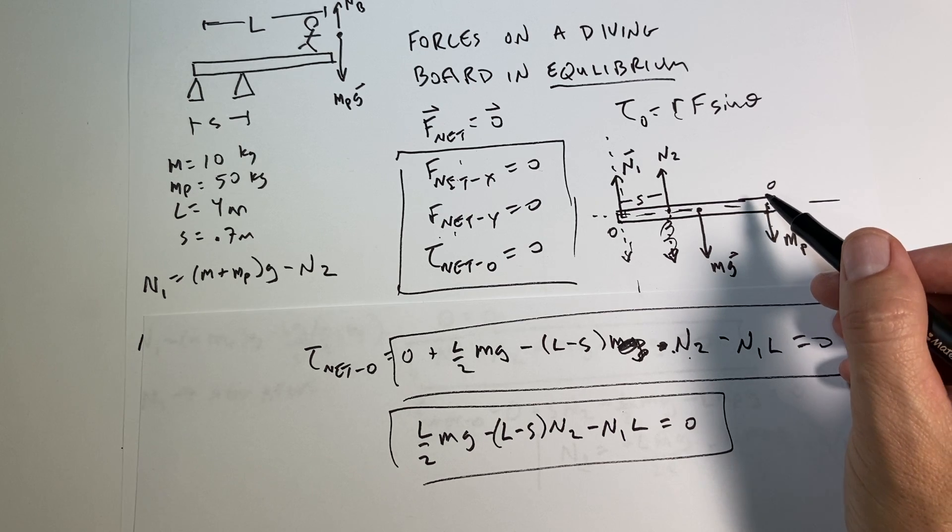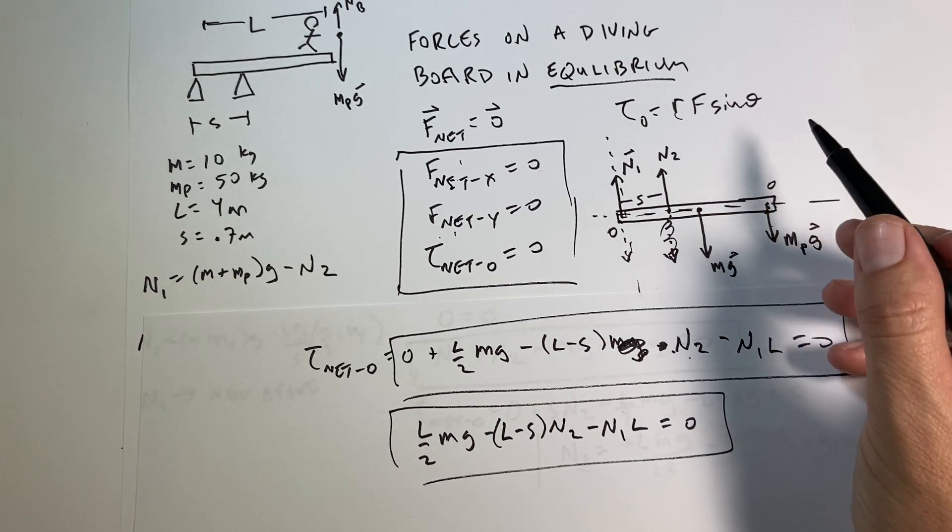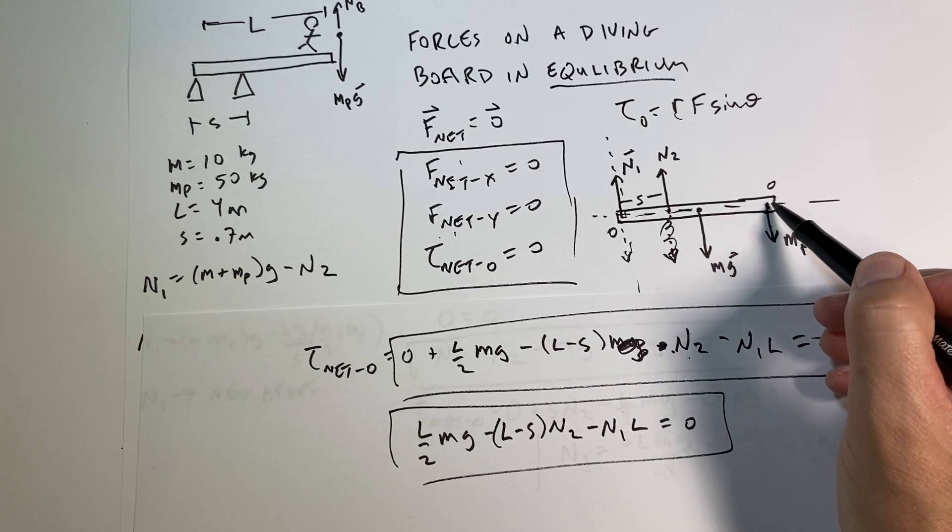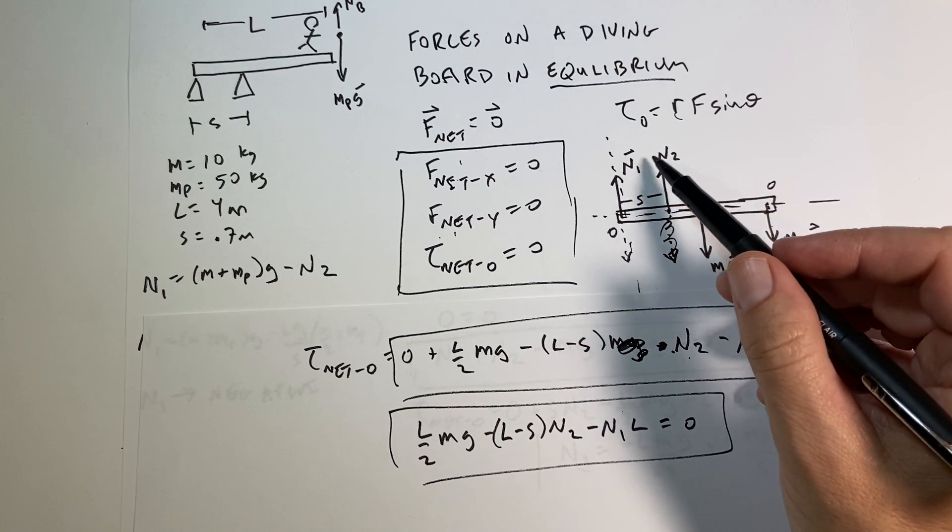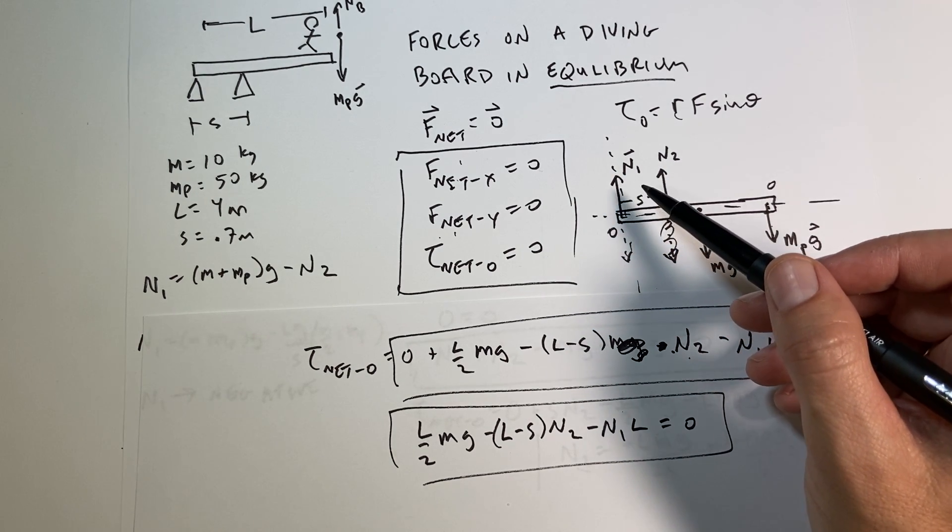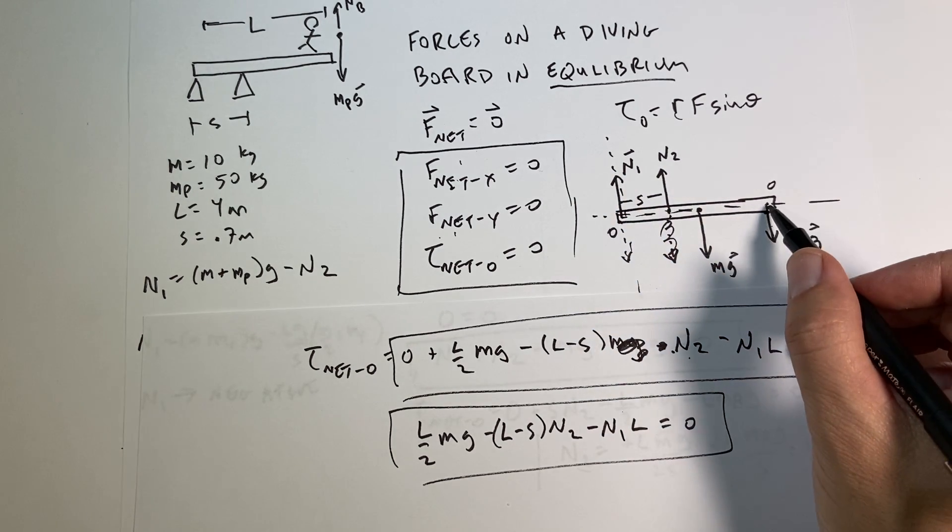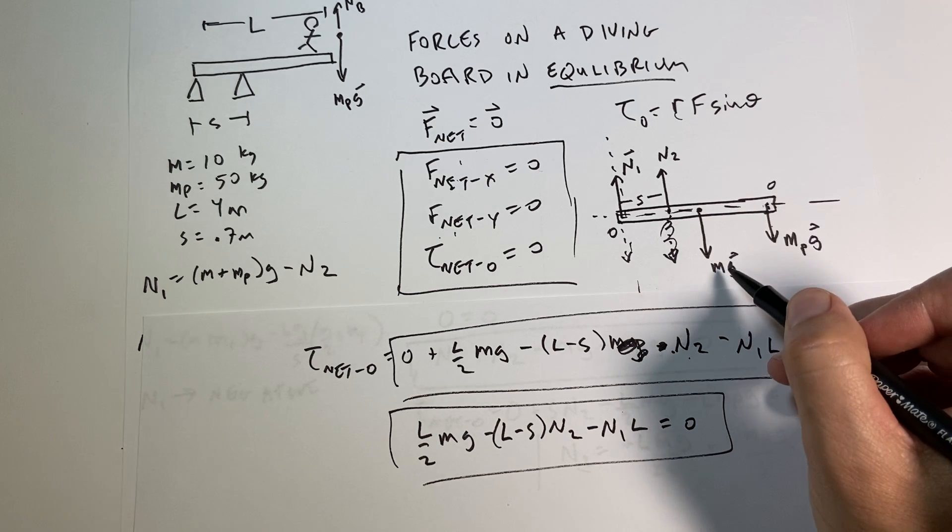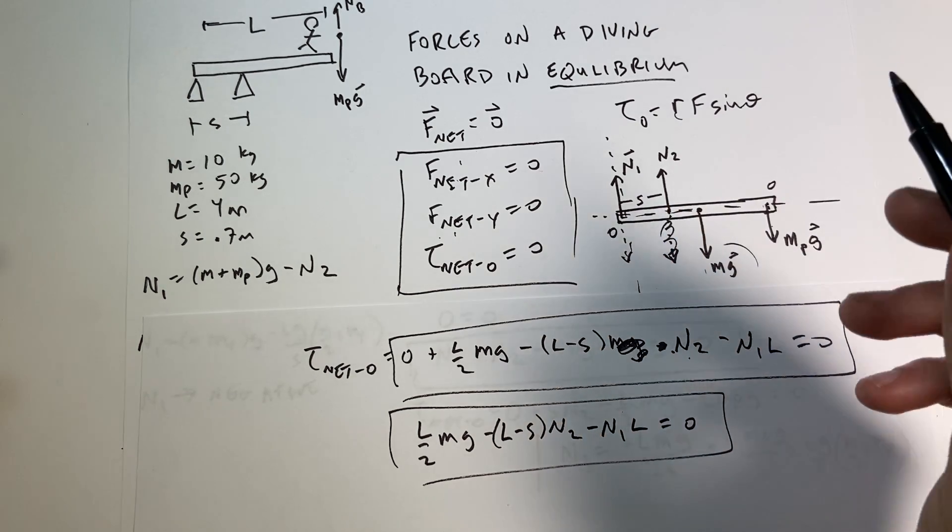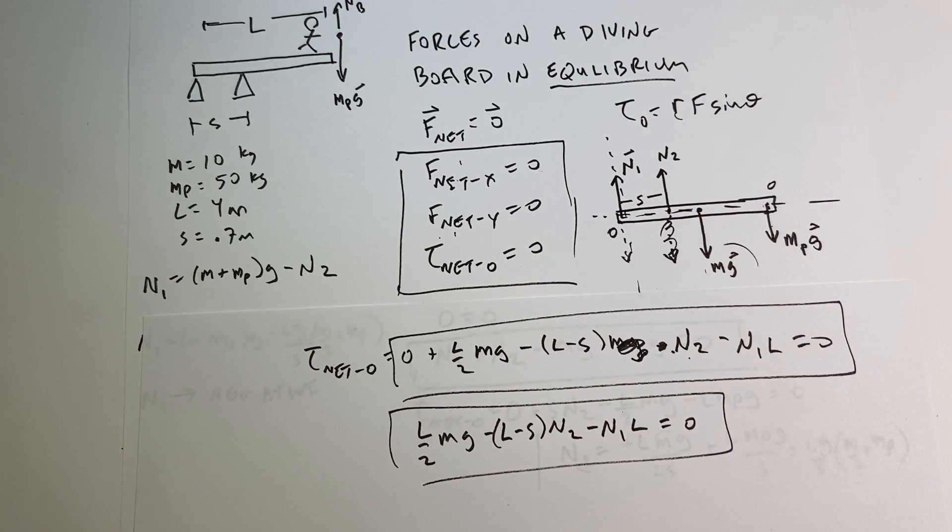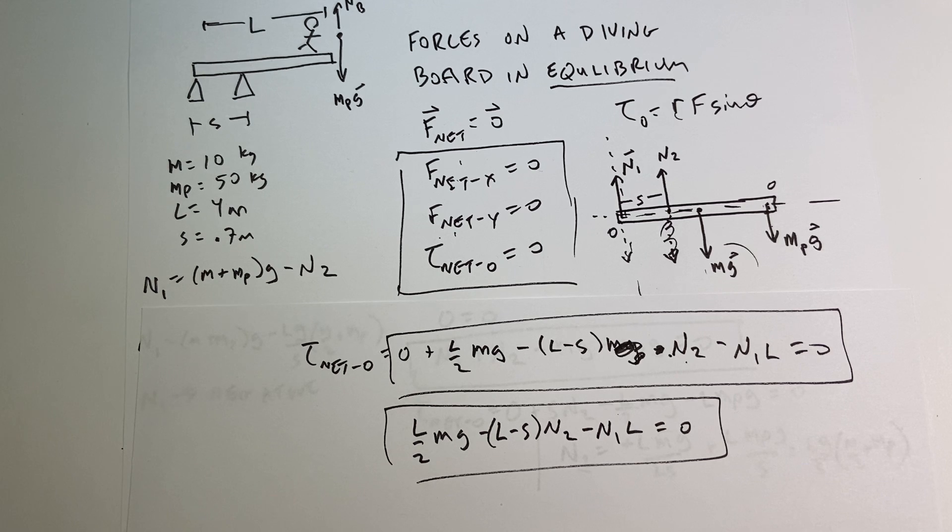So the choosing your origin doesn't matter except that it can make it simpler. So you want to pick a point about which you calculate the torques where one of the torques goes away. One of the ones that you don't know, I wouldn't want to pick it here because I know those forces. I know those forces. So that's your first equilibrium problem. There's a whole bunch of these kinds of things. I'm going to do some more equilibrium problems. So I will see you guys later.